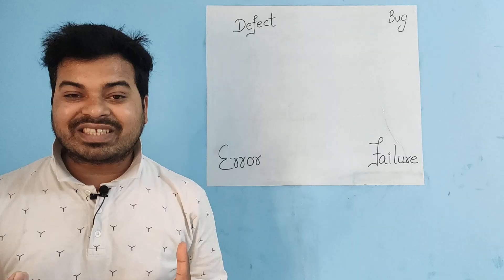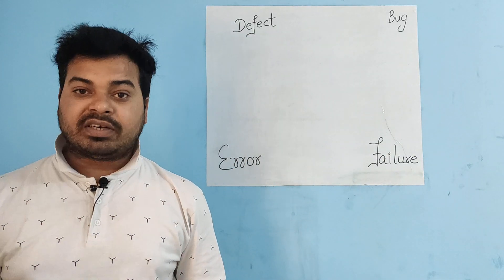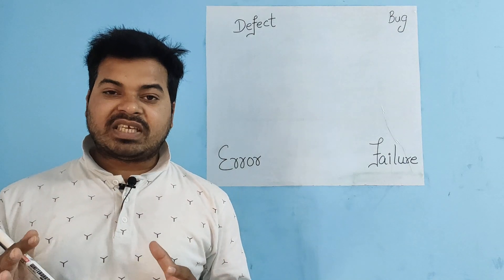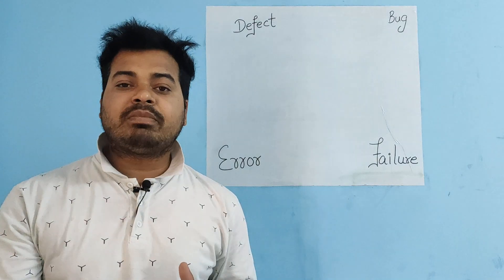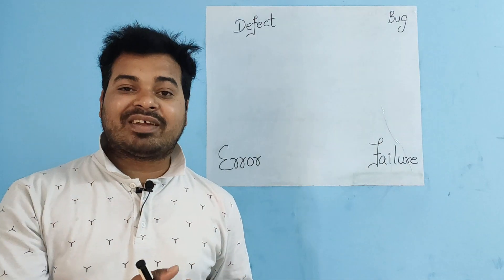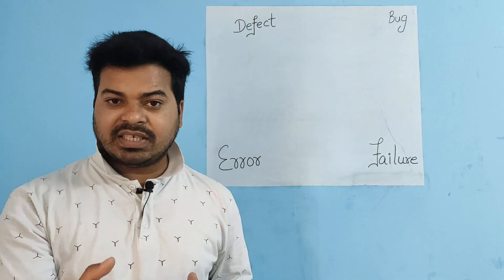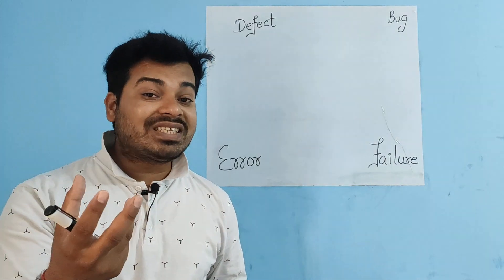So when the developer is testing something, when they've written the logic and now they are testing the same thing in their local setup and comparing the actual result and the expected result. So if a developer is testing something and finds the difference between the actual behavior and the expected behavior, that leads to the defect. Then they make changes and correct it in the development phase itself. That is called a defect.